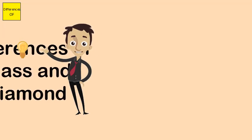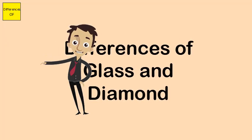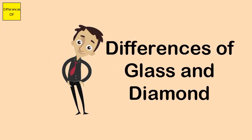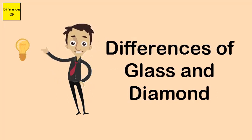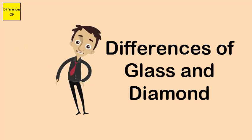Differences between glass and diamond: Glass is non-crystalline, while diamond is crystalline. Glass has a disordered atomic structure, whereas diamond has an ordered atomic structure.